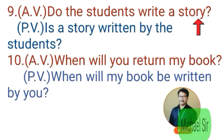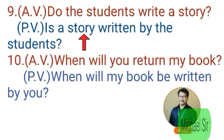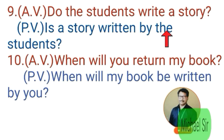Ninth example. Active voice: 'Do the students write a story?' This sentence is an interrogative sentence. 'The students' is subject and 'a story' is object. When we make passive voice, 'do' becomes 'is,' then the object comes and becomes subject. After that, the third form of the verb comes, then 'by' and the subject. Passive voice: 'Is a story written by the students?'